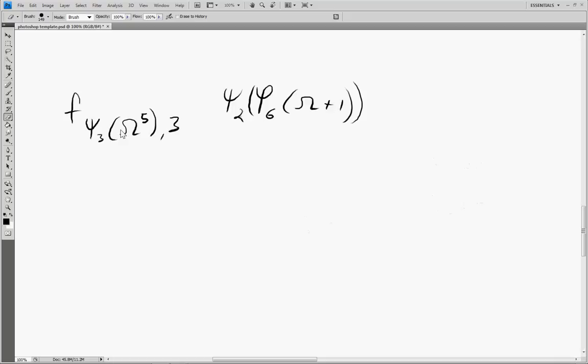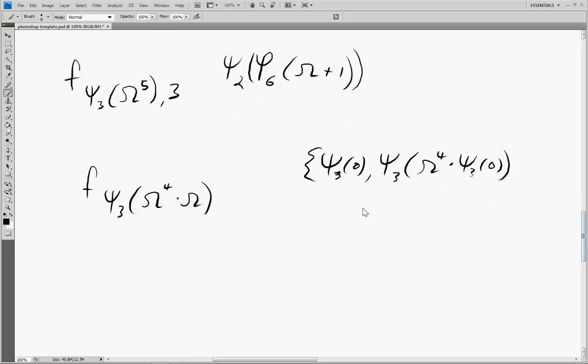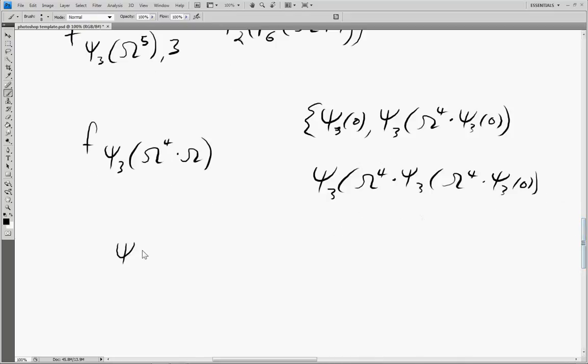So to avoid that altogether, we're not going to do this. The easiest way to do this is to stick with collapsing functions. For instance, in this one, what we would do instead is break one of these things off, so we'd end up with f_ψ₃(ω⁴·ω). We'd write out a fundamental sequence for this starting at ψ₃(0), then move on to ψ₃(ω⁴·ψ₃(0)), and continue creating fundamental sequences, breaking off omegas.